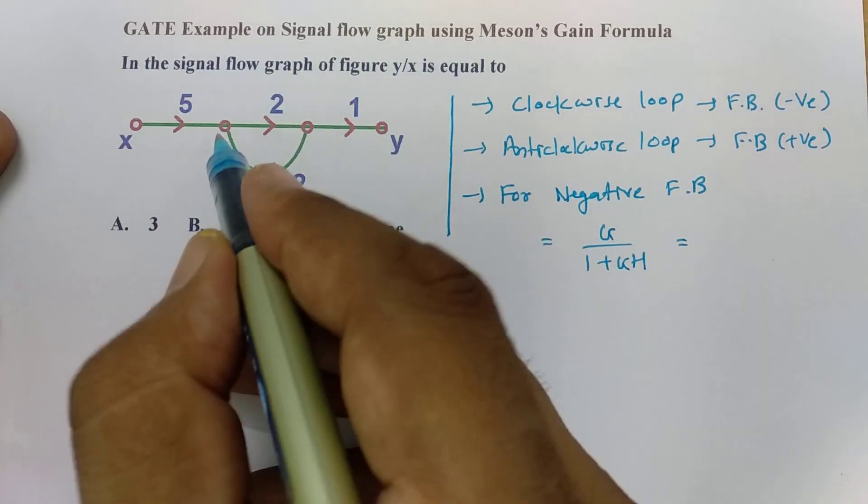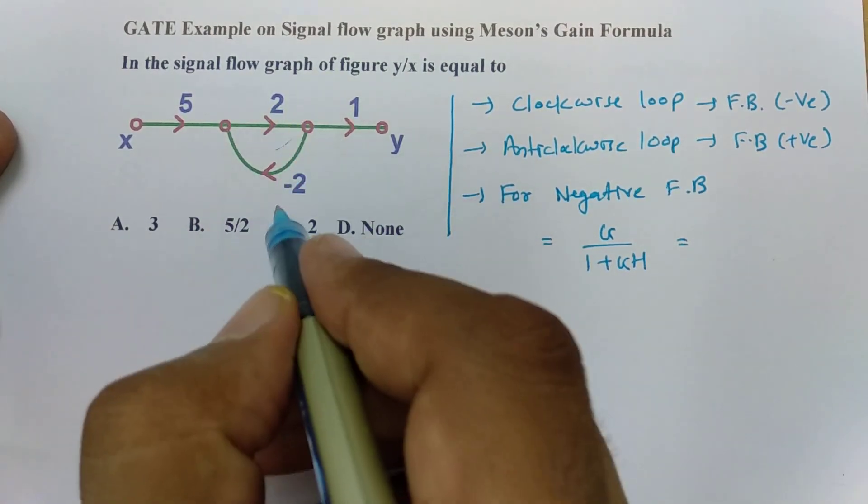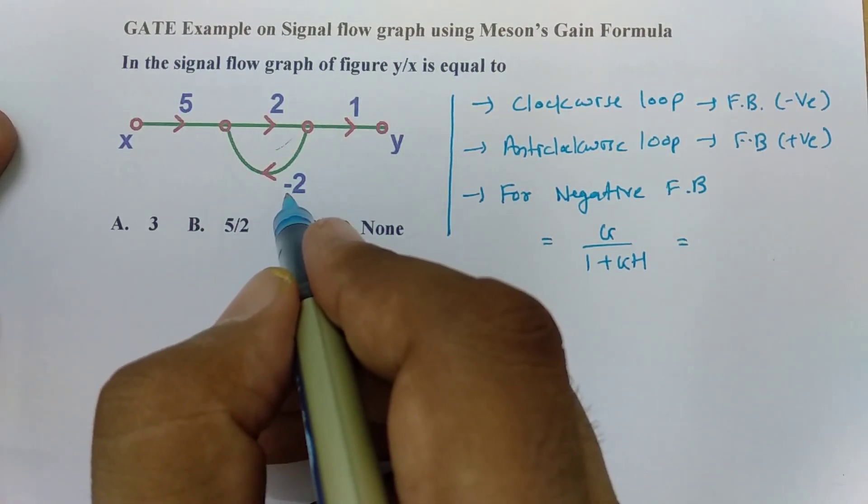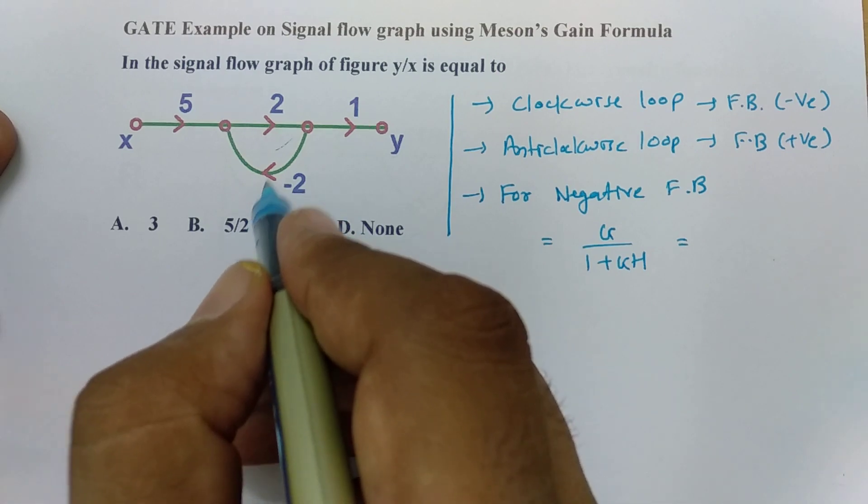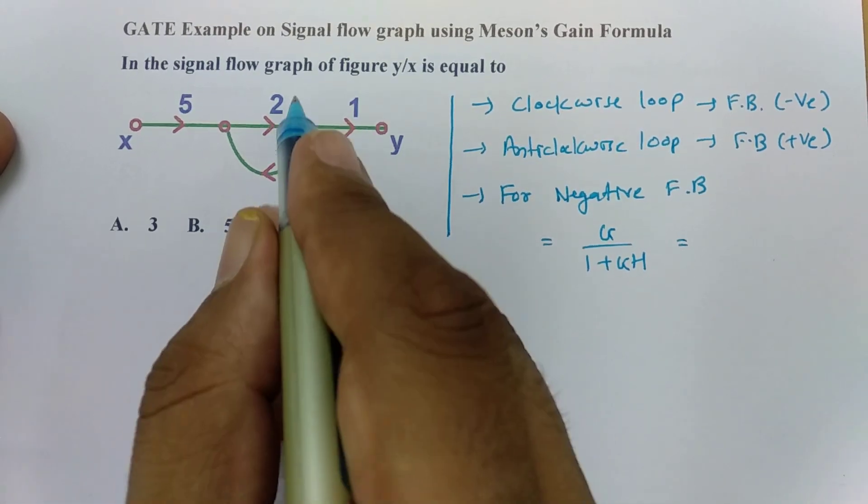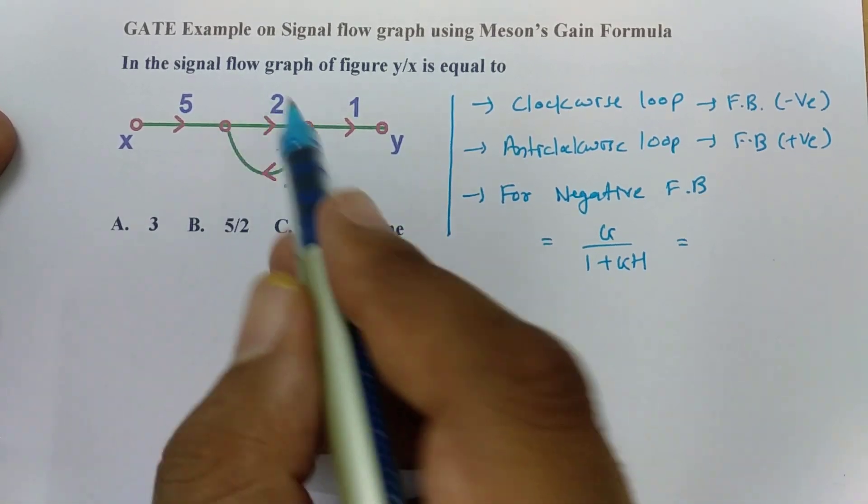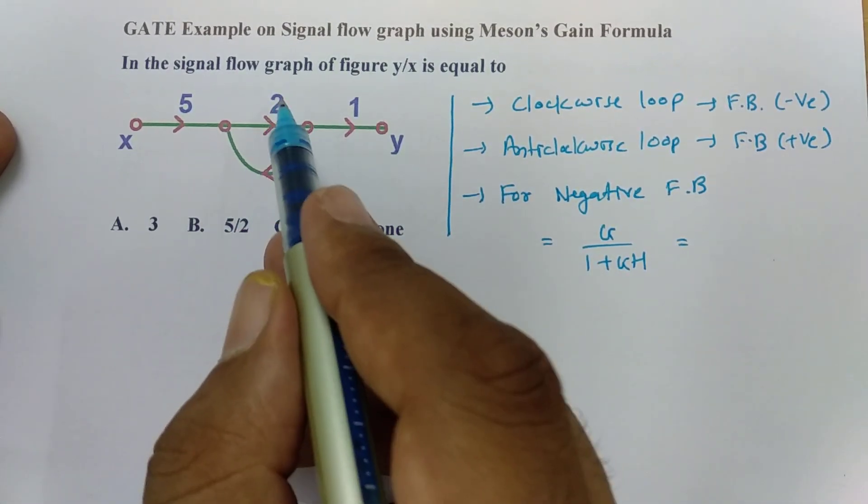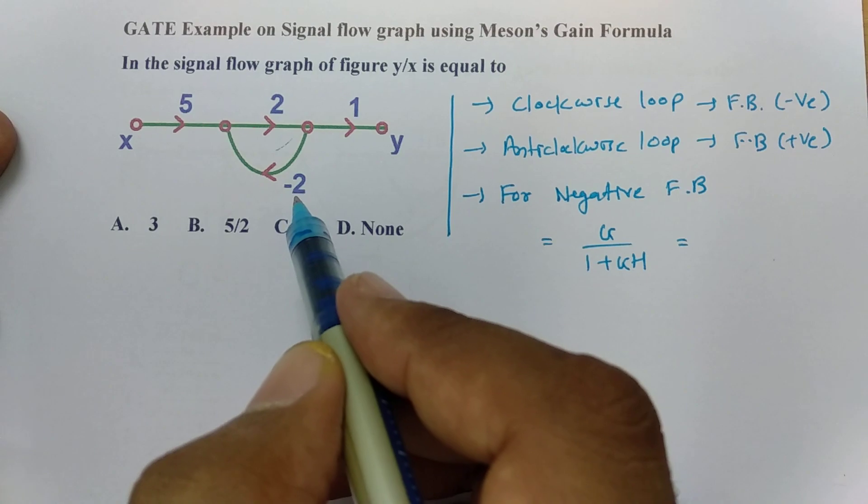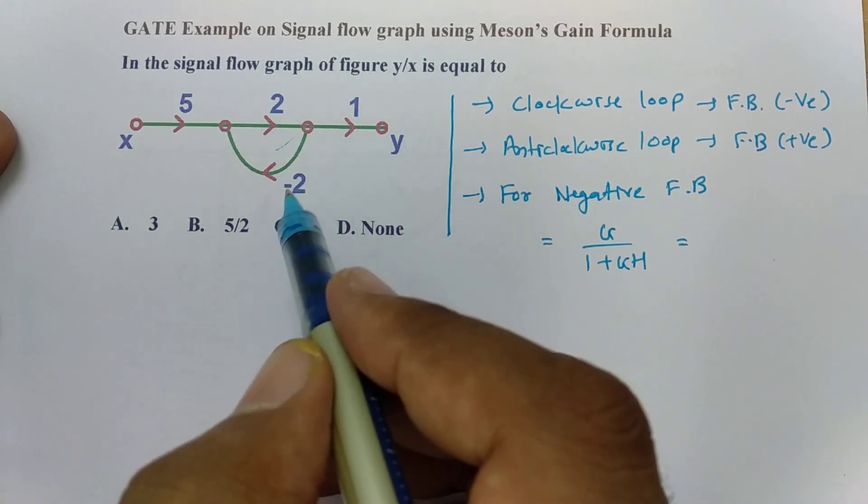So for this loop I'll say it is 2 divided by 1 plus 2 into 2. The reason is it is negative feedback, minus 2 is showing you it is negative feedback. So 2 divided by 1 plus 2 into 2.